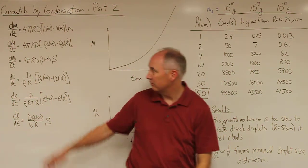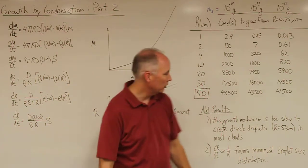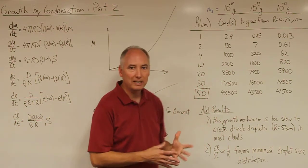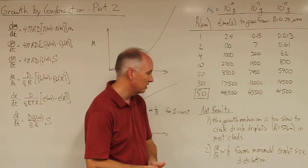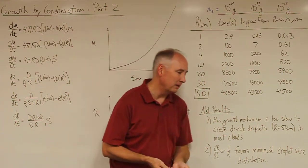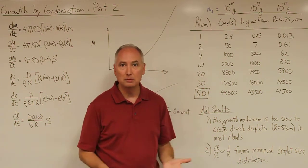And so the net results of these growth by condensation equations is that this growth mechanism is just too slow in most instances to create drizzle droplets in a reasonable amount of time.